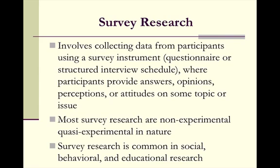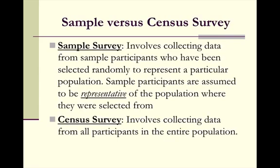A sample survey involves collecting data from sample participants who have been selected randomly to represent a particular population — those participants are assumed to be representative of the population. Census surveys involve collecting data from all participants in the entire population. A sample survey could be something like a mall survey, assuming it's representative of the group being studied, while a census survey, just like the name implies, includes everyone in the population.